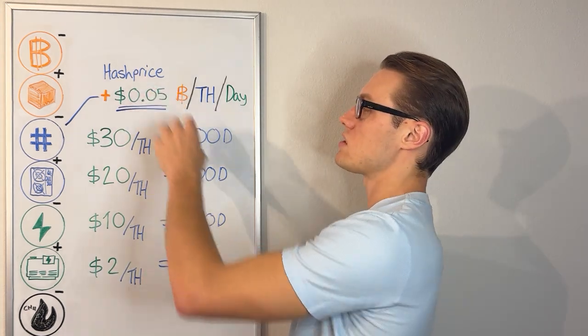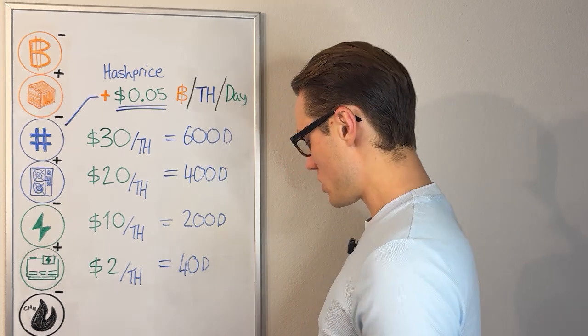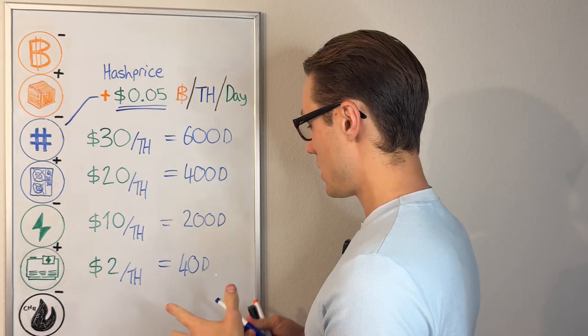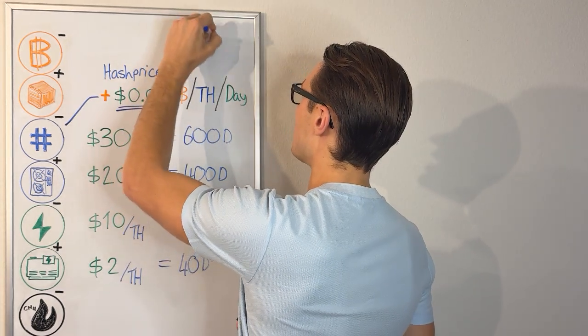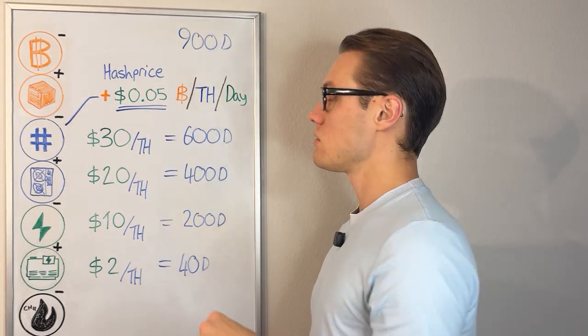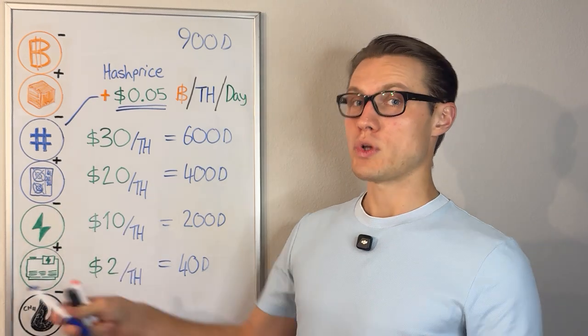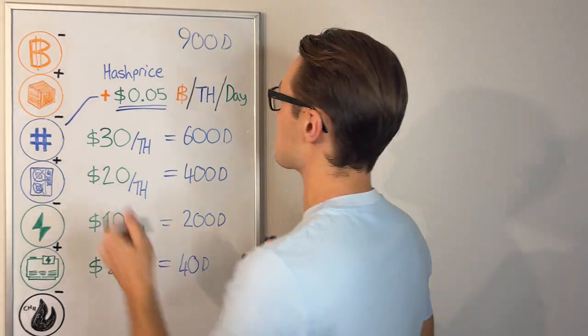I mentioned that the halving is in 900 days. Let's put 900 here and reverse it the other way around. 900 days, and I'm not going to use 5 cents. I'm going to assume that this declines to an average of 4 cents.